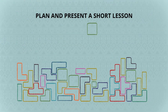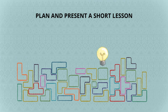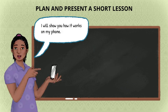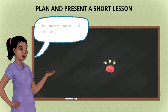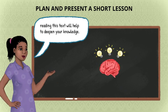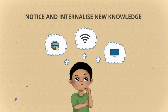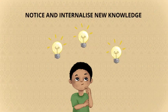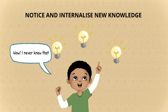Plan a short lesson about key concepts to help learners fully access the text. Let's learn a little about using the internet. I will show you how it works on my phone. Then, once you understand the basics, reading this text will help to deepen your knowledge. Teach learners that when they notice they are learning something new, they have a better chance of remembering it.